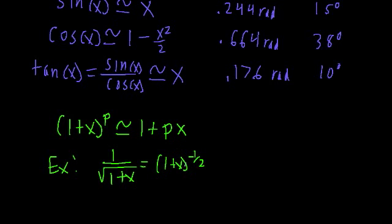And if x is small, we can rewrite it using our Taylor series approximation. And knowing that p is equal to negative 1 half, we can say that this is approximately equal to 1 minus x over 2.